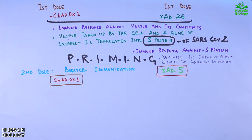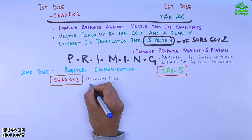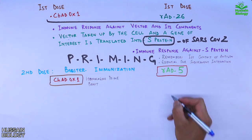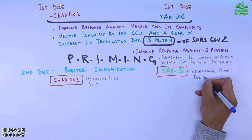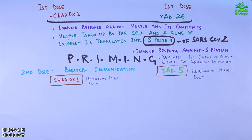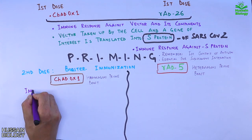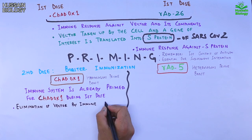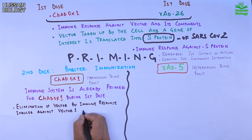AstraZeneca vaccination is homologous prime-boost, whereas Sputnik V — using two different vectors — is heterologous prime-boost. In the case of AstraZeneca, the immune system is already primed for ChAdOx1 from the first dose. So when our immune system encounters the same vector again, it launches an immune response toward vector one and tries to eliminate it — elimination of the vector by the immune response induced against vector one by priming.